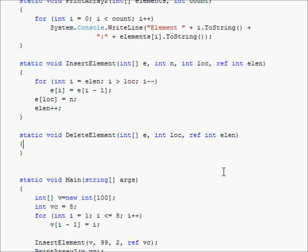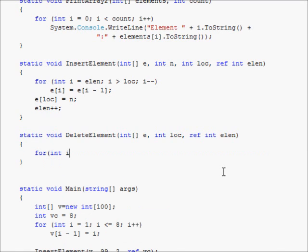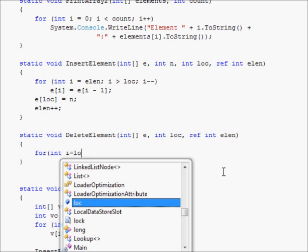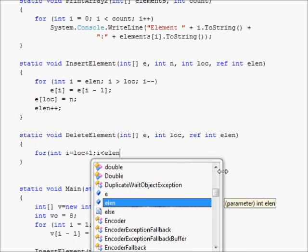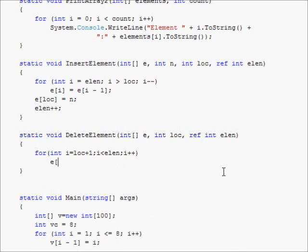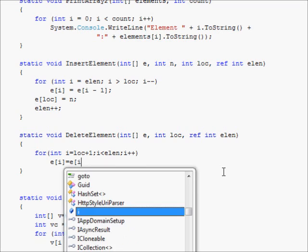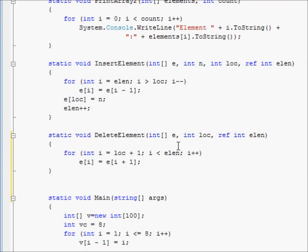We have int location and reference int elen. So now what are we going to do? We are going to say for int i equals location plus one, i smaller than elen, and i plus plus, e of i equals e of i plus one.